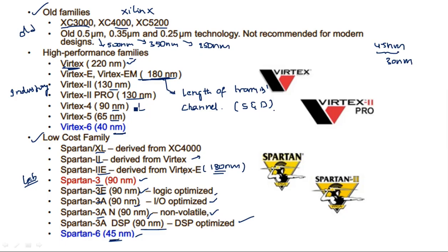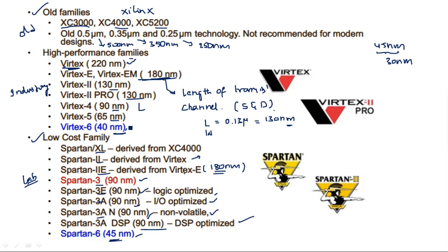If you have Mentor Graphics or Cadence tools in your college, check the transistor parameters — you will have L value and W value. If L value is 0.13 micrometers, then its technology name is 130 nanometer technology. The minimum length you can take is 130 nanometers; you cannot go below this value. If you are taking 40 nanometer technology, the least length of the transistor you can consider is only 40 nanometers. All these are different logic families depending upon their applications.